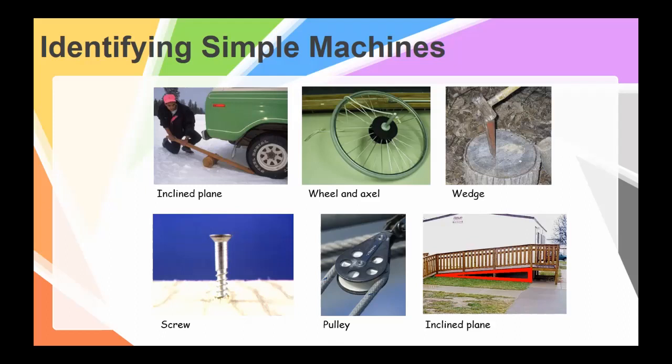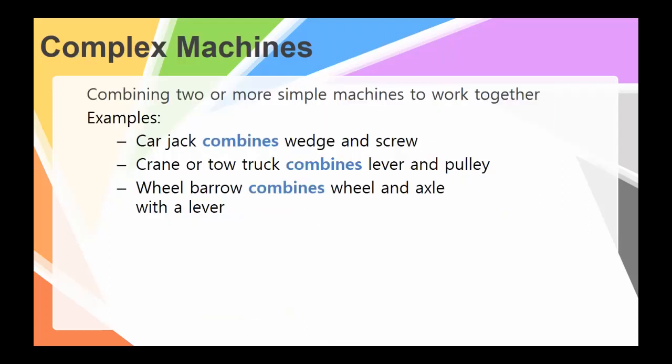Now, we've been talking about simple machines. What about complex machines? Well, anytime you have two or more of these together, you have already a complex machine. So two or more simple machines working together makes a complex machine.